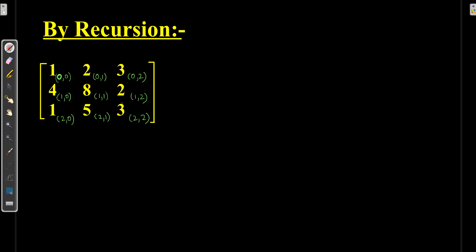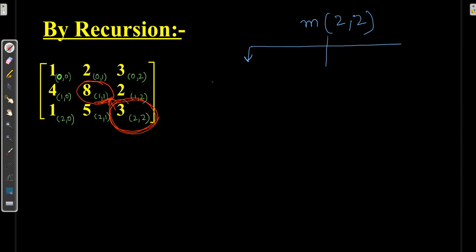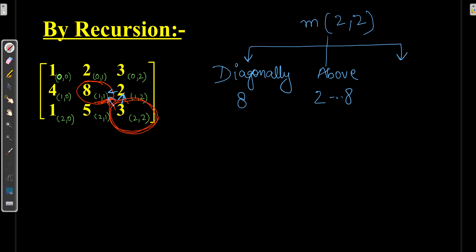Let's see how we can solve this problem with recursion. Taking the same matrix, if I am at (2,2) and need to travel to (1,1), in how many ways can I reach there? From (2,2), I can go diagonally to reach (1,1) with value 8, or go above — first to (1,2) then (1,1) with value 8 — or go sideways via (2,1) then (1,1) with value 8. Out of these three paths, whichever has minimum cost we take.